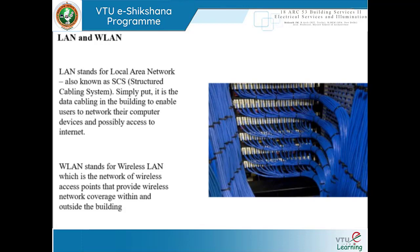WLAN is the same local area network which comes in a wireless form — a network of wireless access points that provide wireless network coverage within and outside the building. This is closely associated with our point matrix. In a residential layout it's just a couple of points, but in an office you will have numerous users on a single floor, requiring many points. This layout of tapping wires to end users is the point matrix layout.